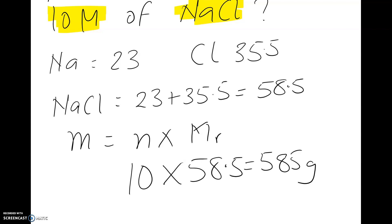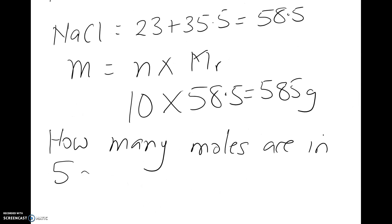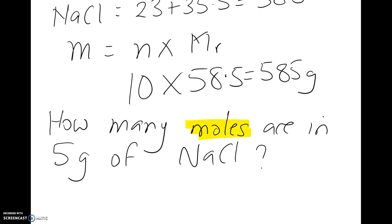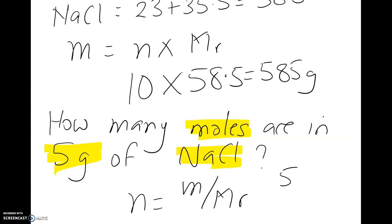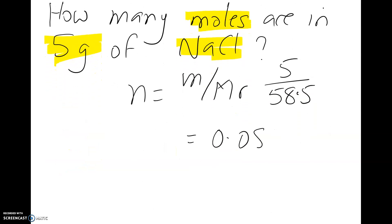Let's look at a different example: How many moles are in 5 grams of NaCl? We know NaCl has Mr of 58.5 as previously calculated. This time we need to work out the number of moles — we know the mass and we know the formula. So n is equal to mass over molar mass: 5 divided by 58.5, which gives 0.085 moles.